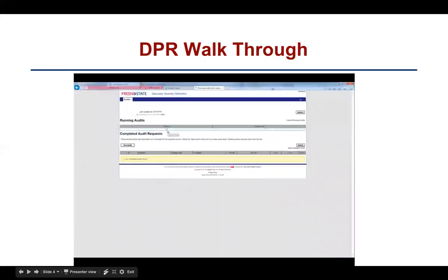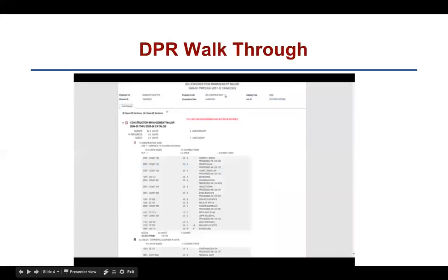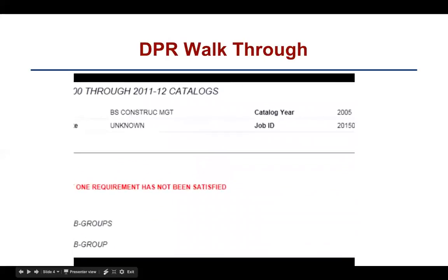Notice that this symbol will let you know that the DPR is still running. After the DPR is done running, you'll need to click on View Audit to view the audit in HTML or to download the audit if PDF format was selected. Note that within this page, you will have access to delete old DPRs if you no longer wish to see them. Once you're able to view your Degree Progress Report, you'll need to pay close attention to both the major and the catalog year which are listed at the top of the DPR.